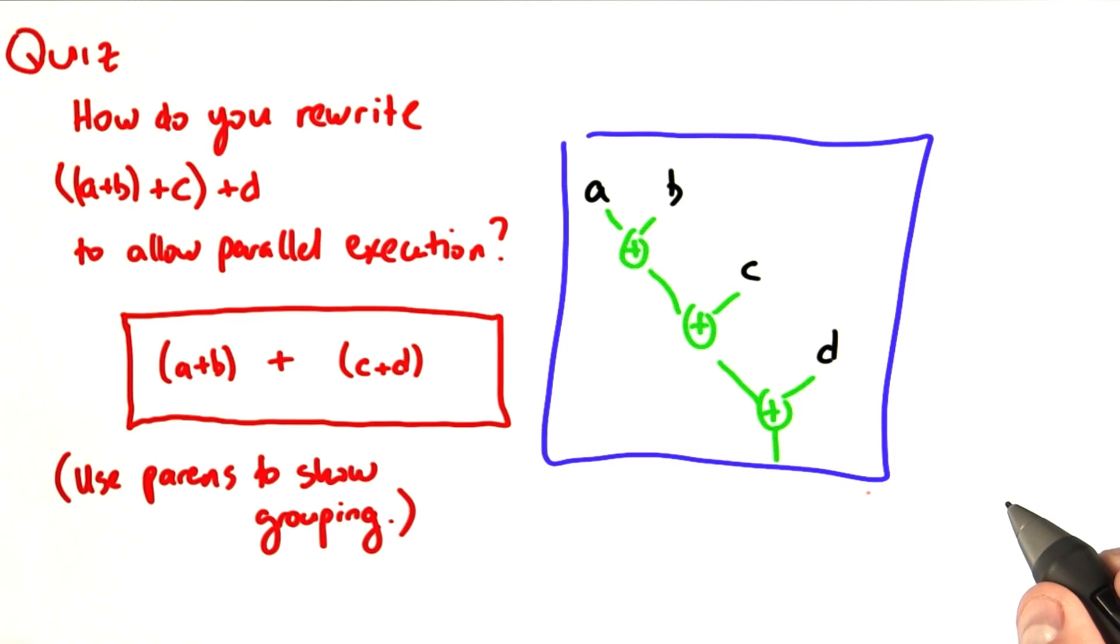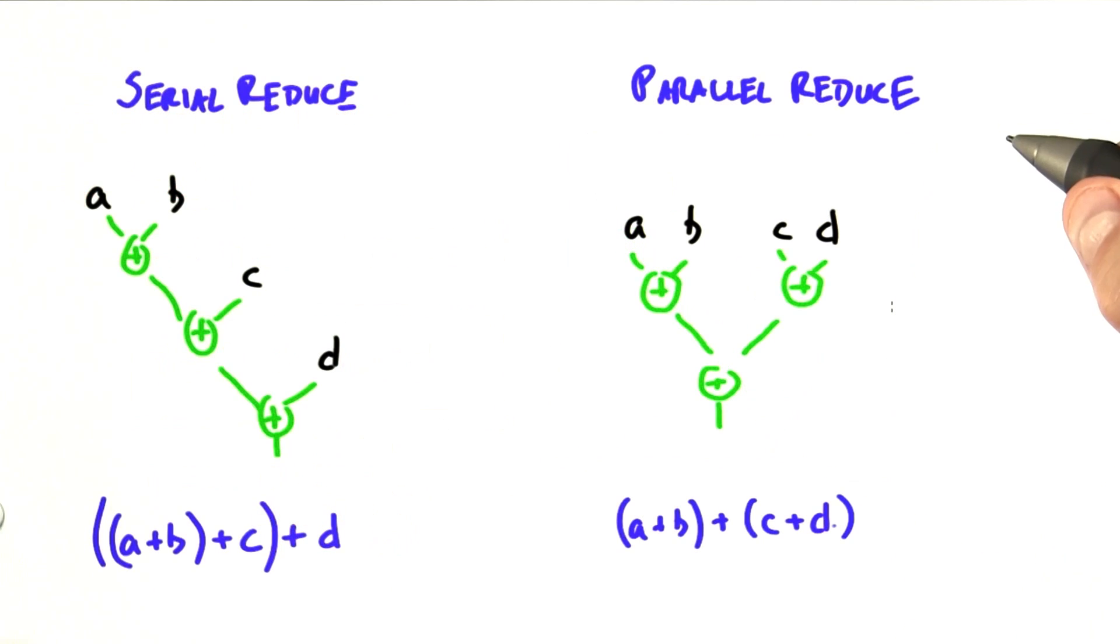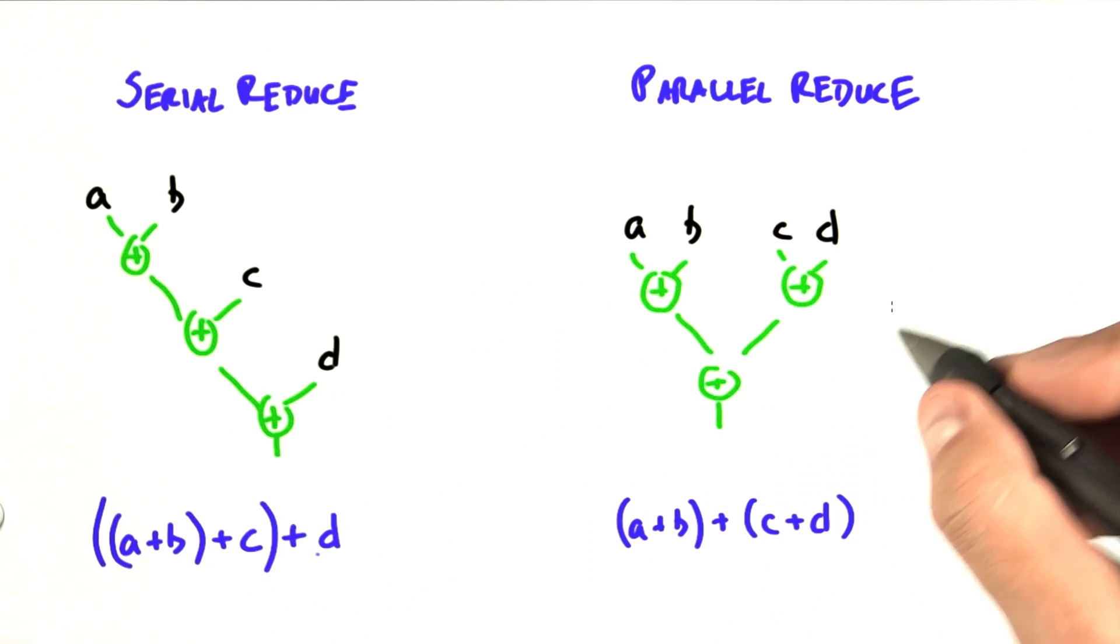Now, what's that going to look like in terms of our tree structure? So now we've got serial reduce and parallel reduce side by side. Here's serial reduce in the equation. Here's parallel reduce in the equation.